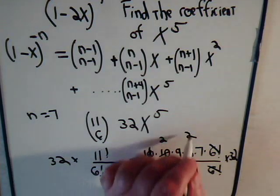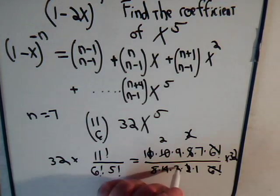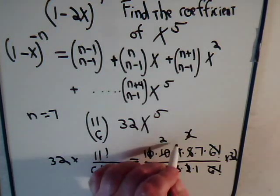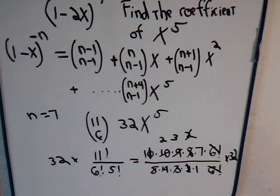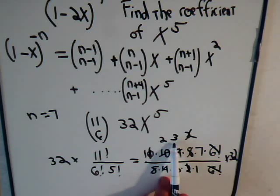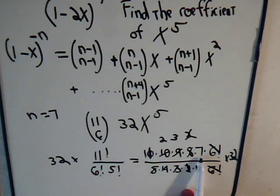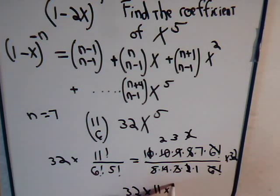These 2, those 2's cancel. And this goes into 9 three times. So it looks like we have here 2 times 3 is 6 times 7 is 42 times 11. So here we have 32. So you have 32 times 11 times 42.